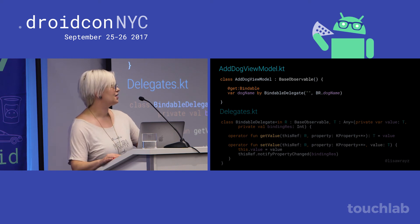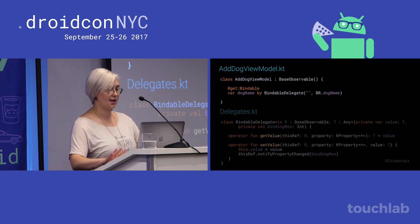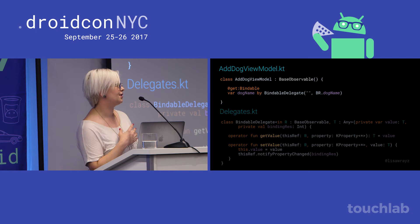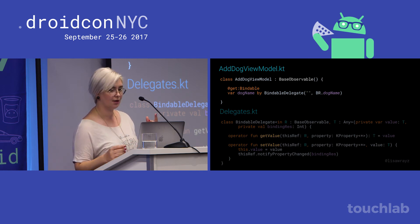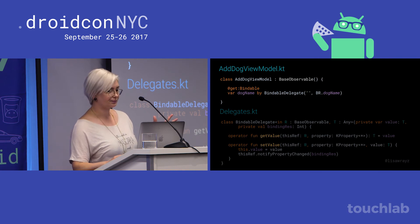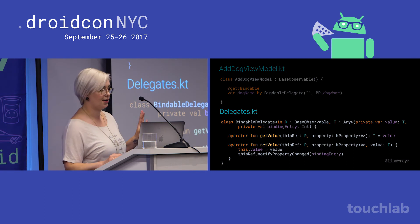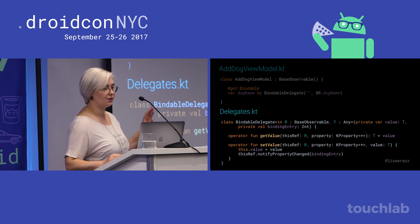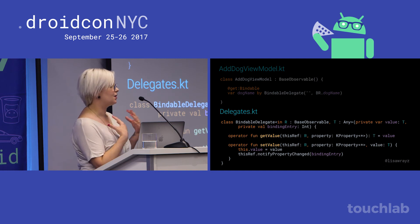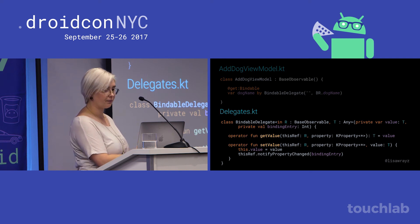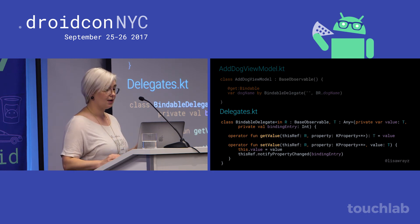So here we are with a completely custom delegate. Now we can do `dogName by bindableDelegate` and pass in the initial value and the BR entry — I'm using bindableDelegate to avoid a namespace conflict. It doesn't get a lot more compact than that. Here's the implementation: this delegate operates on a class extending BaseObservable — that's R — and it handles any type of property — that's T. It requires an initial value of the property type and also the binding entry, BR.yourproperty.